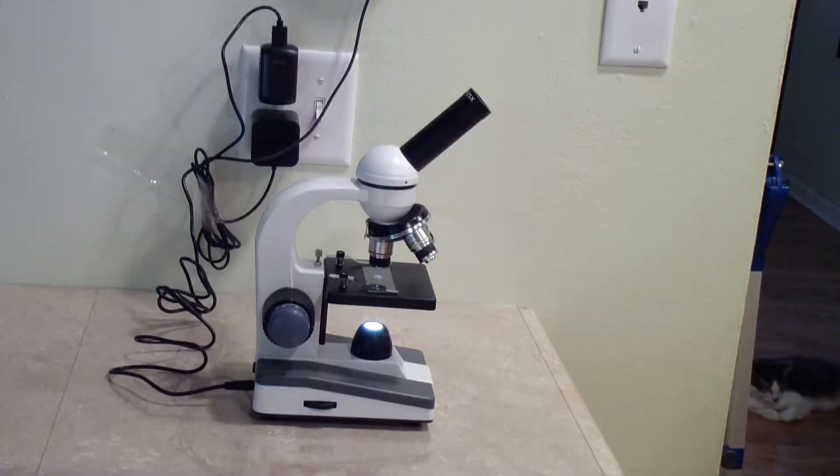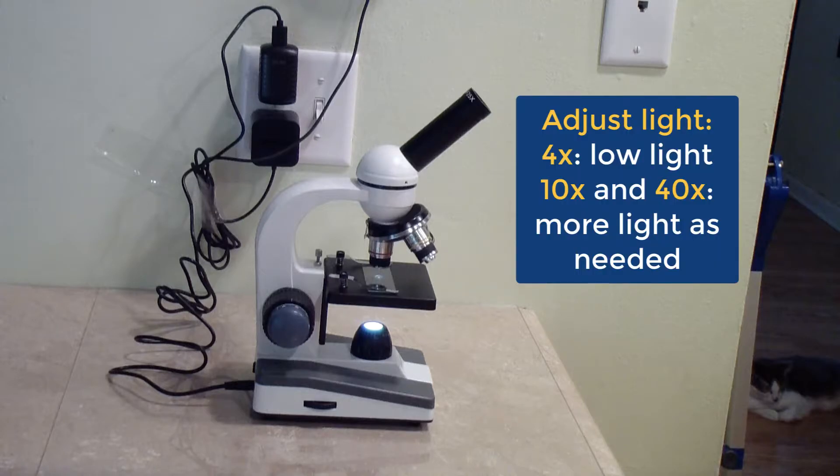Get used to adjusting the light as you look through the microscope. In general, when you use the 4x objective you should turn the light down with either the dimmer or the diaphragm.